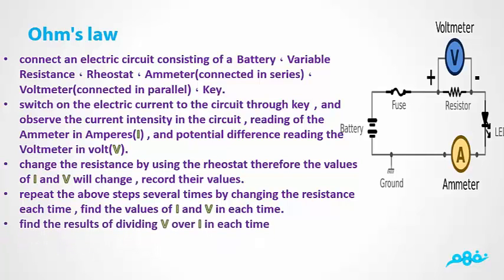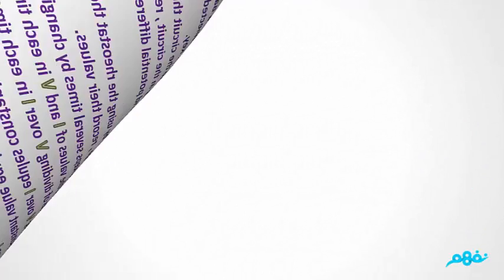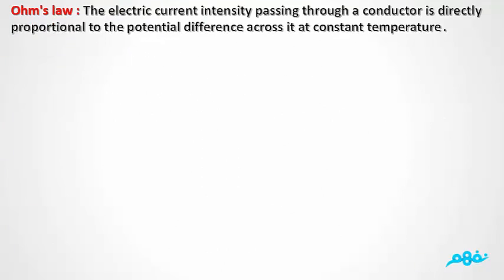Results: 5. Find the results of dividing V over I each time. 1. Dividing V over I equals a constant value. 2. The constant value equals the resistance, with symbol R and unit ohm. 3. V over I equals R — this relationship is known as Ohm's Law. Ohm's Law states: The electric current intensity passing through a conductor is directly proportional to the potential difference when the temperature is constant.